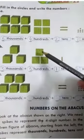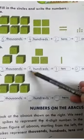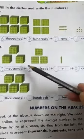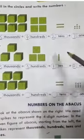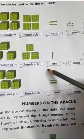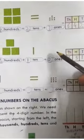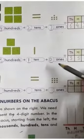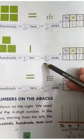Again there are 3 figures: 1, 2, 3. So with 100s you will write 3. With 10s you will write 1. And in 1s there are no figures, so you will write 0.